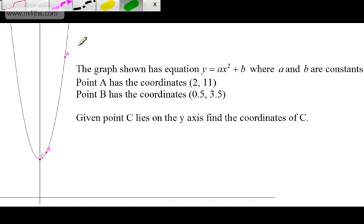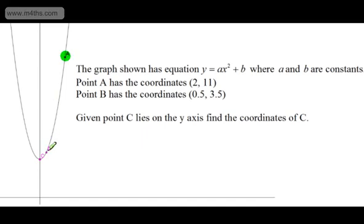So we can see here that A is on the curve just here, we've got B on the curve, and also we've got C on the curve, and C is sitting on the y-axis.